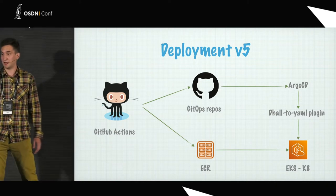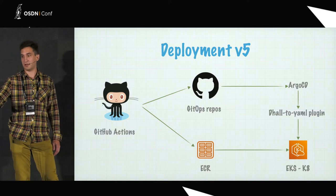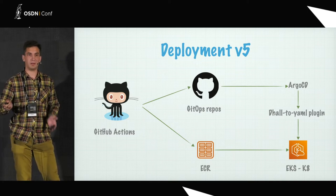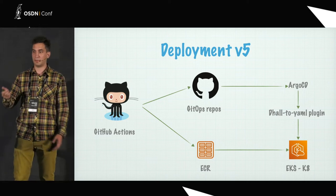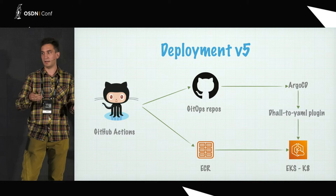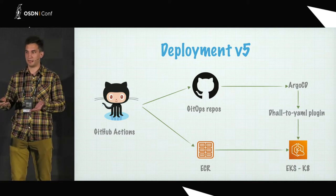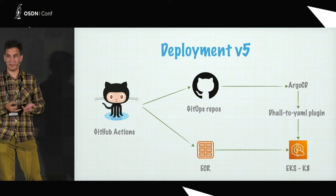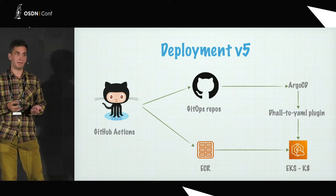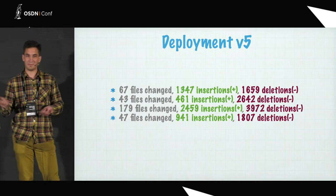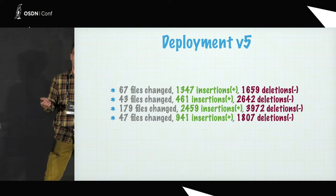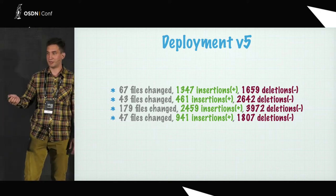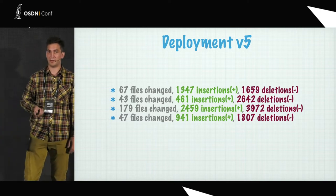So what changed with Dhall? We changed just one minor part: instead of the Kustomize middleware, we switched to the Dhall-to-YAML plugin. Now in our GitOps repositories, we had Dhall files. Argo CD would pull those Dhall files and compile them into Kubernetes manifests just before pushing to Kubernetes. We still have GitOps, we still have everything version controlled, but now we have a different language for our configuration. And first of all, it allowed us to remove up to 50% of the code, removing huge amounts of code duplication.